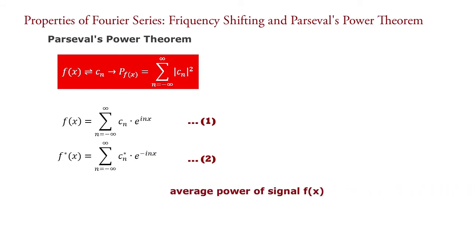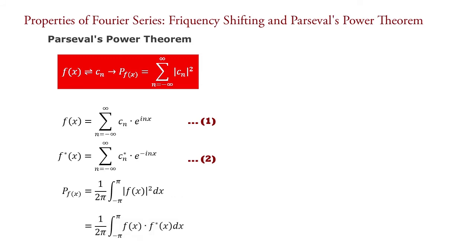Now, the average power of signal f(x) is represented as P of f(x) equals 1 upon 2π times the integral from minus π to π of the modulus of f(x) squared dx, which equals 1 upon 2π times the integral from minus π to π of f(x) times f(x)* dx. Here we split the modulus squared into two separate functions f(x) and f(x)*.